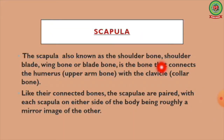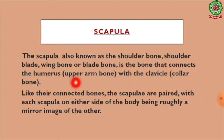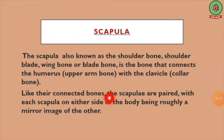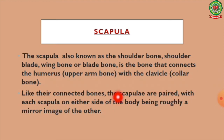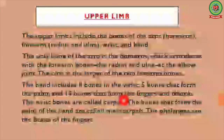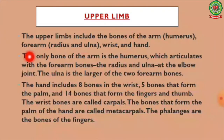Next comes the scapula, also known as the shoulder bone, shoulder blade, wing bone, or blade bone. It is the bone that connects the humerus (upper arm bone) with the clavicle (collar bone). Like their connected bones, the scapulae are paired, with each scapula on either side of the body being roughly a mirror image of the other.